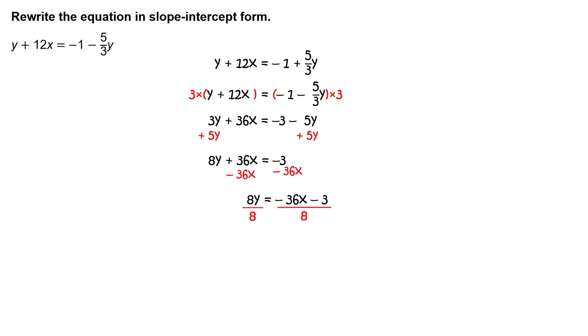Divide each side of the equation by 8. You will get y equals negative 36/8 x minus 3/8. Reduce to get y equals negative nine-halves x minus three-eighths.